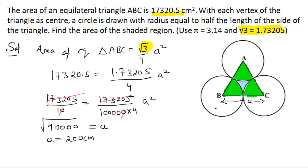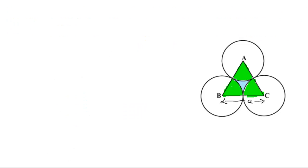How much is the radius? The radius is half of the side length, so radius equals 100 cm.